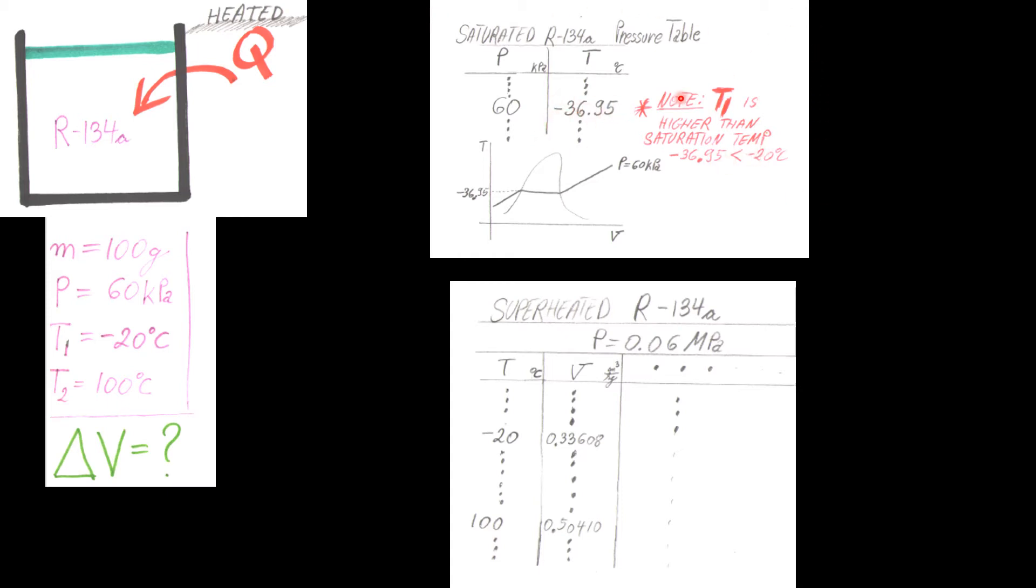So this table is not good for us to take properties from. We need to go to the superheated table. R-134a pressure. Make sure you go to the correct pressure window: P equals 0.06 megapascals. Don't get lost with the units. Sometimes they change units from kilopascals to megapascals.